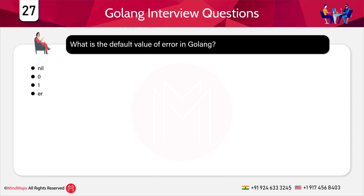What is the default value of error in Golang? Options: a) nil, b) 0, c) 1, d) error. The answer is a) nil. The default value of error is always nil. That is why when we check an error, we write: if err != nil — where err is the keyword widely used by Golang developers to check for errors.